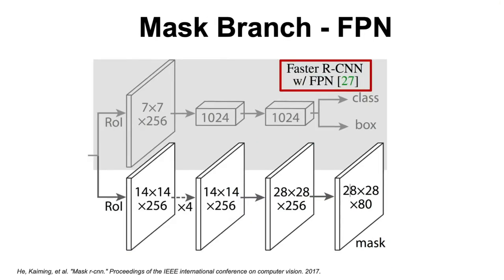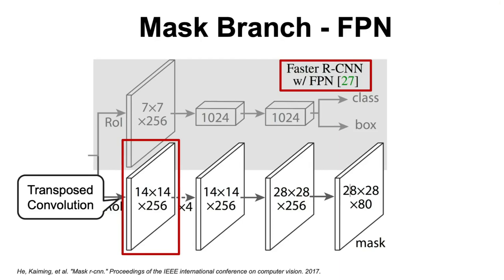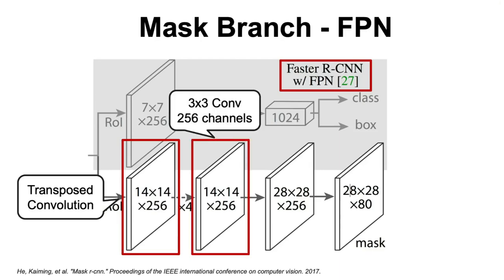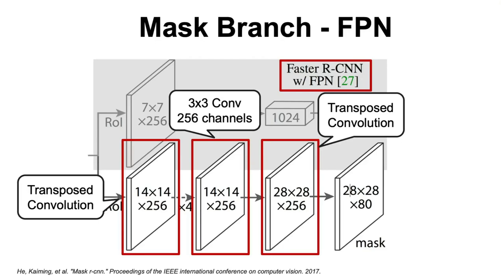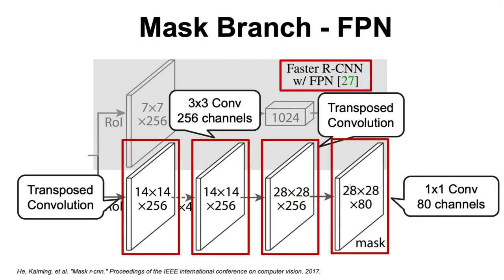And for the feature pyramid network, it consists of a deconvolutional layer followed by 4 convolutions with a 3x3 kernel, followed by a deconvolution, followed by a 1x1 convolution with 80 channels. Again, each channel depicting the possible mask in MS-COCO.